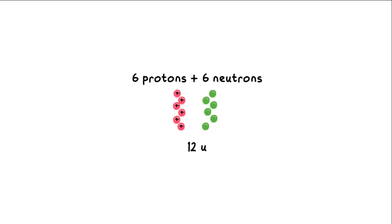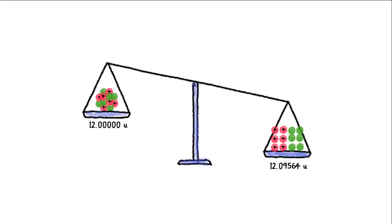Surprise! The mass of a proton is actually 1.00728U. A neutron is 1.00866U. So the mass of a carbon nucleus is less than the sum of its parts.